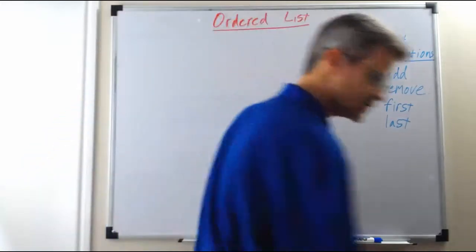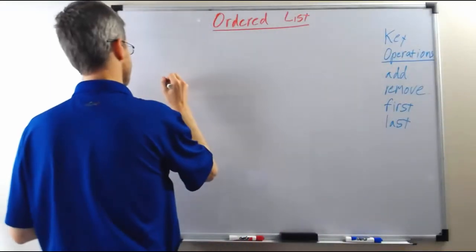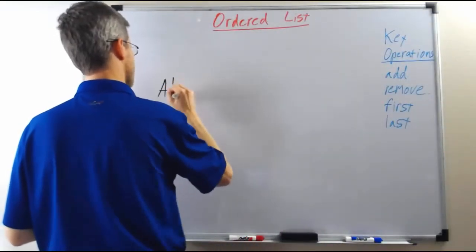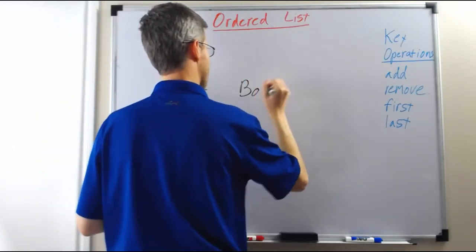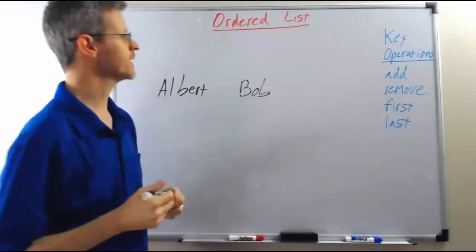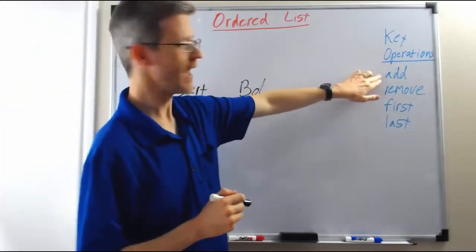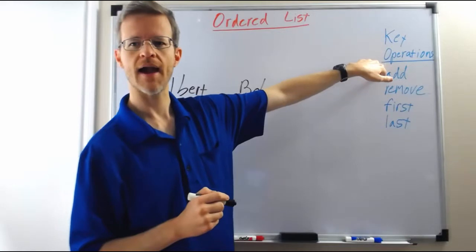So let's look at an example. Let's suppose that we have an ordered list that initially contains the names Albert and Bob, and then we call add with the name Alice.